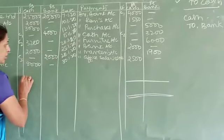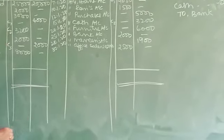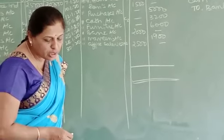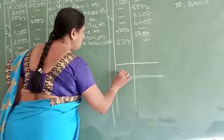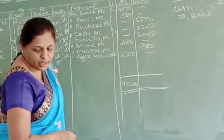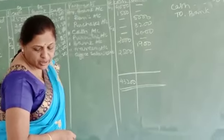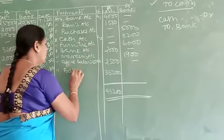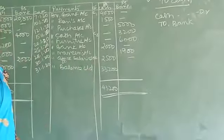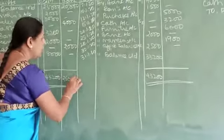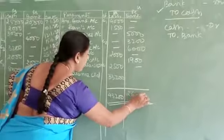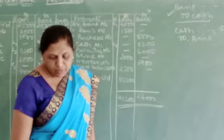Now let's leave a line and close it. First total the debit side. The total of the debit cash column is 43,200. Write the same 43,200, and after minusing you get 33,200. Write the date, buy balance carried down. Come to the bank column, total the debit of the bank — you get 26,000. Go on minusing one by one and you get 9,900.